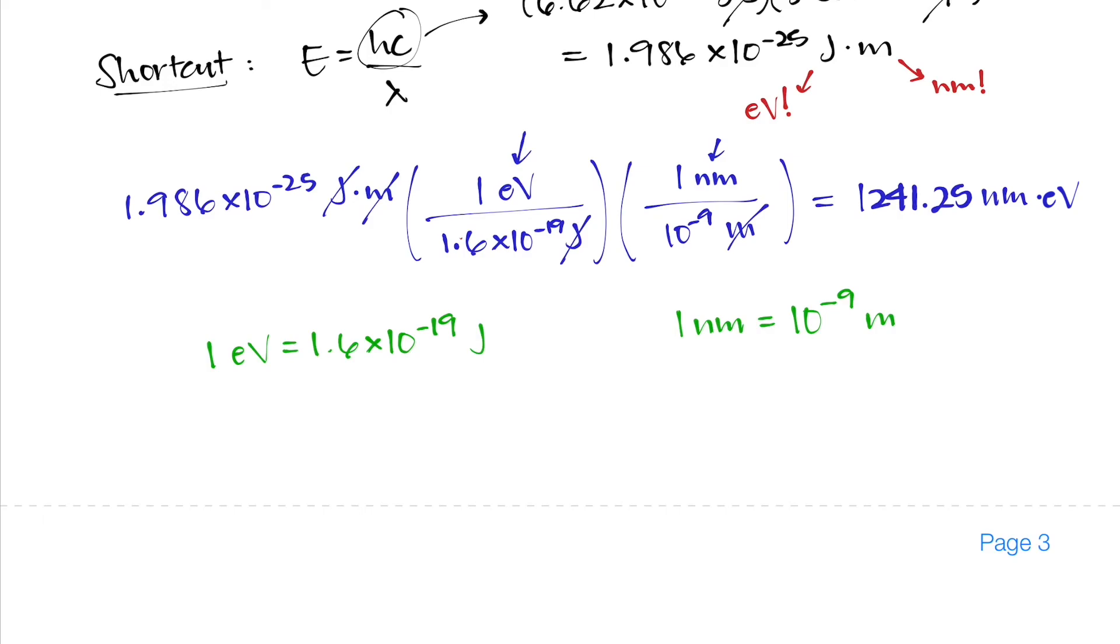But to make it even simpler, let's just round this off to 1240 eV nanometers. And anytime you're dealing with E equals hc over lambda, just use 1240 eV nanometers for that hc in that equation. And that's going to make the math a lot easier to do.